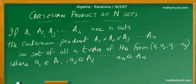A1, A2, A3 to An in such a manner that the first element A1 is an element of the set A1 and goes on like that up to An, which is an element of the set An.